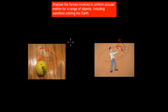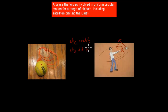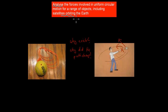There are two questions: first, why did it go in a circle — why was there circular motion in the first place? And second, why did the path change once we cut the string? Those two things are what we're going to discuss in this video. We're going to talk about circular motion, specifically to analyze the forces involved in uniform circular motion for a range of objects, including satellites orbiting the Earth.